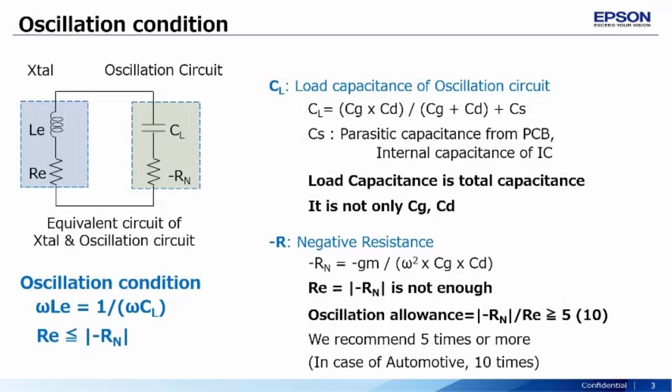Load capacitance plays an important role in that it controls the operating frequency of the crystal. It can be calculated using the formula shown here, where CS is the parasitic capacitance from the PCB. For optimum performance, an oscillator circuit must be designed in such a way to enhance the negative resistance or oscillation allowance.